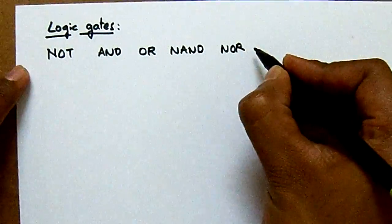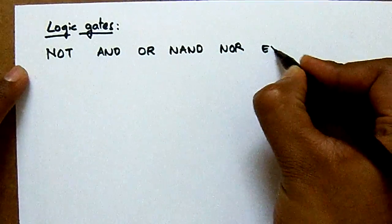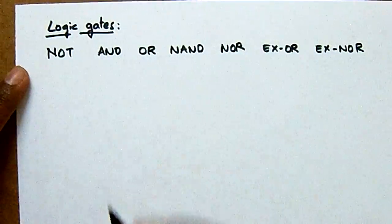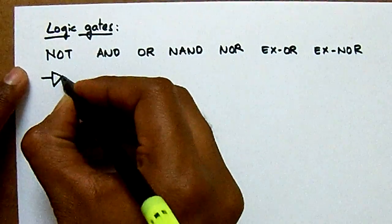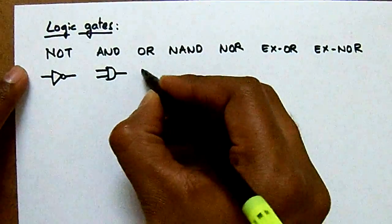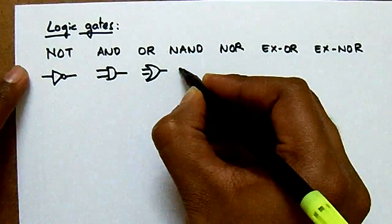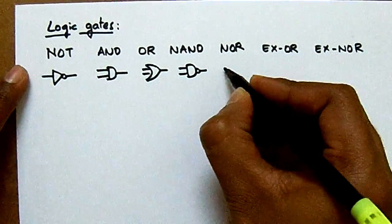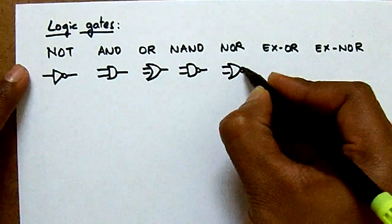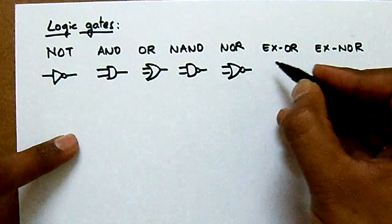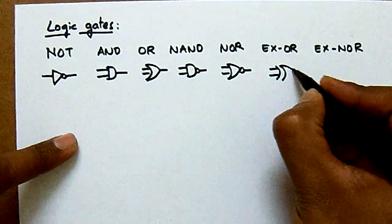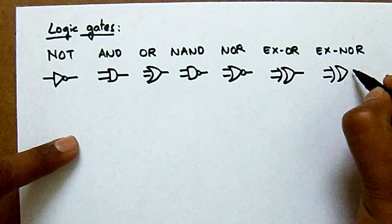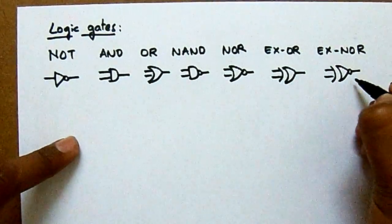The symbols are: NOT gate, AND gate, OR gate. NAND gate is AND with an inverter — the inverter is indicated with a bubble. NOR gate is an OR gate with an inverter, also indicated with a bubble. XOR gate is shown with its own symbol, and XNOR is the inversion of XOR — an inverter added to an XOR gate, so we add a bubble to it.